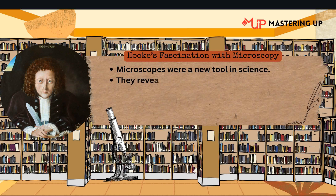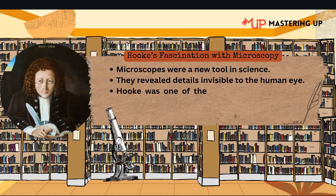One of his most important contributions was his work in microscopy, which revealed an entirely new world hidden to the naked eye. At this time, microscopes were still a relatively new invention and scientists were only beginning to explore what they could reveal. Hooke was one of the first to use a compound microscope, which used multiple lenses to magnify objects. This innovation allowed him to see details far smaller than anyone had ever imagined.